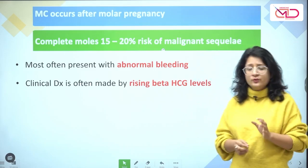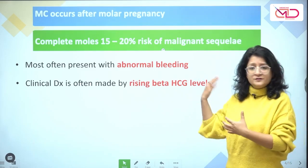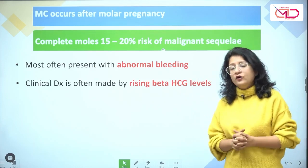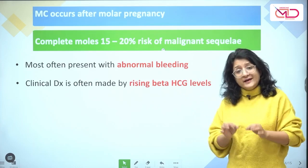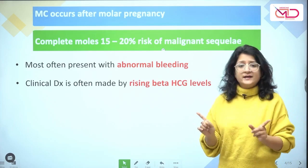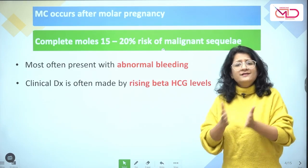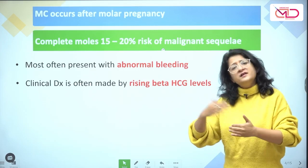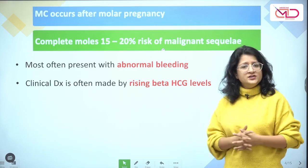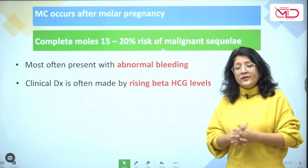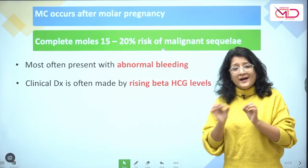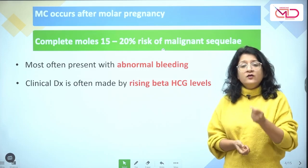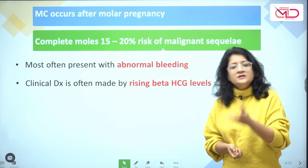Most commonly GTN occurs after a molar pregnancy where we can do all these follow-up activities. However, it can occur after any pregnancy event, and it is very unreasonable to follow each and every pregnancy event with histopathology or beta-HCG levels. So when there is no prior history of a molar pregnancy, the diagnosis of GTN requires a strong clinical suspicion.